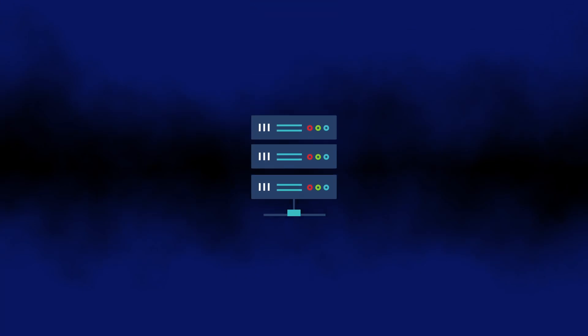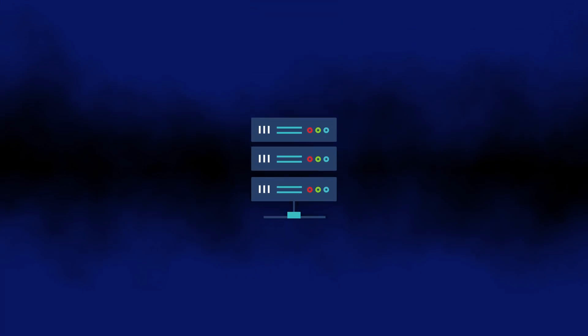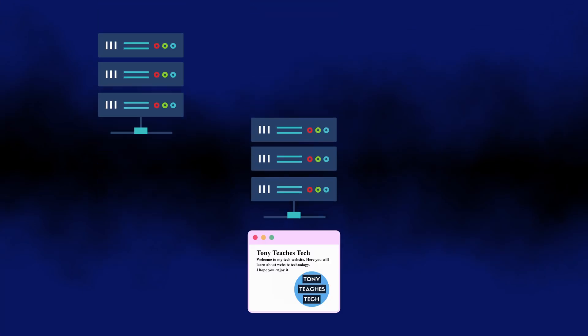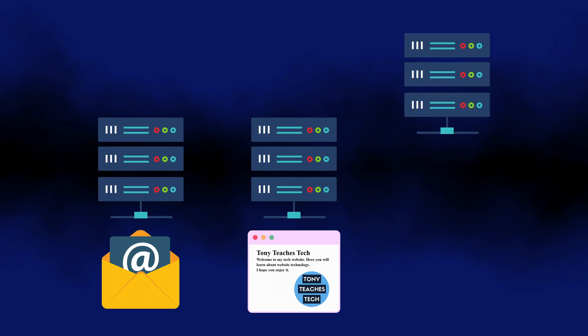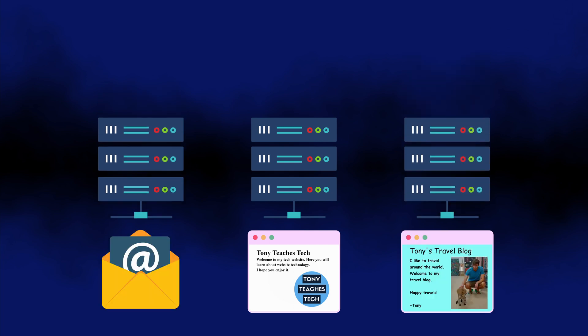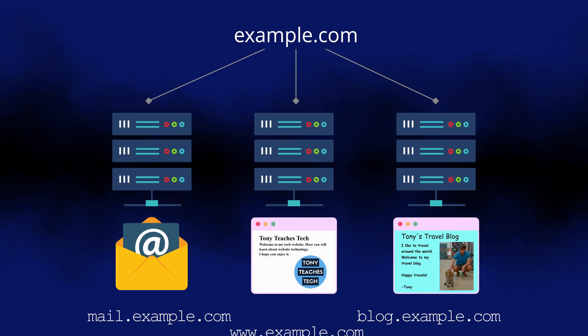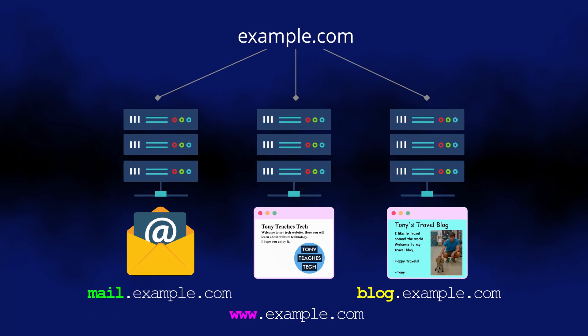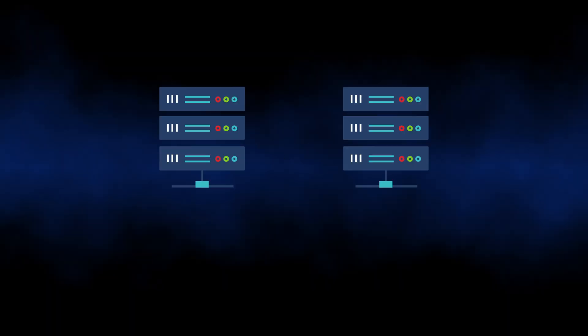Back in the early web days, it was common for a single server to be dedicated to hosting a website, a separate server to host email, and another one to host a blog. While these servers might share the same domain name, a subdomain was added to distinguish them — and that's really all WWW is: it's a subdomain.